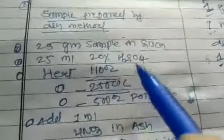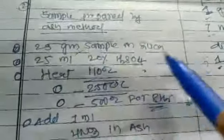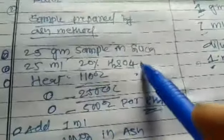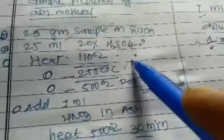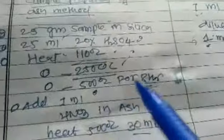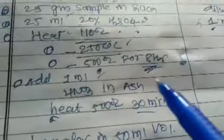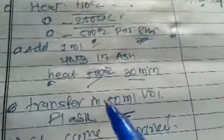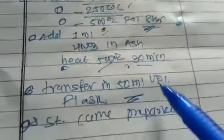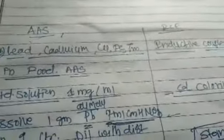For sample preparation, extract metals from the sample by taking 20 grams of sample in a silica crucible, adding 20 ml of 20% H2SO4. Heat at 110 degrees Celsius, then at 250 degrees Celsius, and finally maintain at 500 degrees Celsius for 8 hours. After 8 hours, add 1 ml concentrated HNO3 to the ash and heat again at 500 degrees Celsius for 30 minutes. Transfer the solution to a 50 ml volumetric flask. Run this against the standard solution by atomic absorption spectroscopy or ICP to detect all minerals in the food.